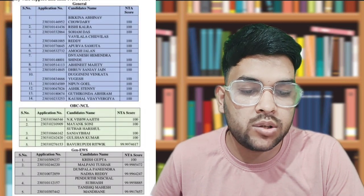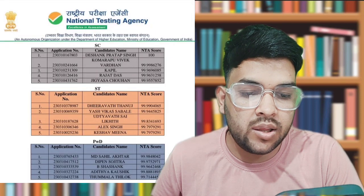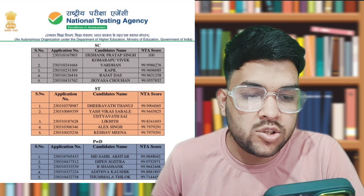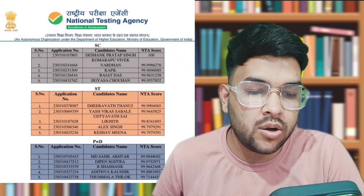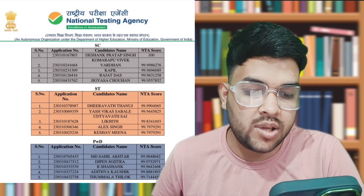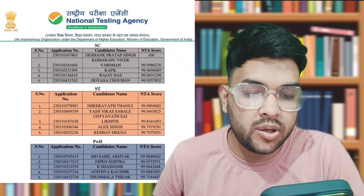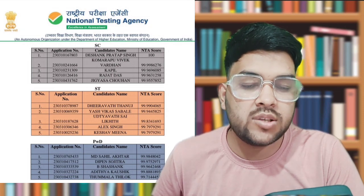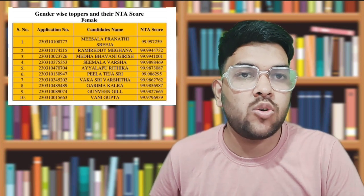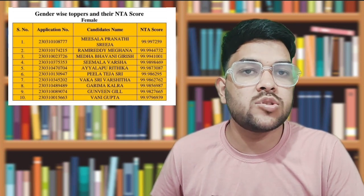Category-wise 100 percentile achievers: OBC – 4 students; EWS – 1 student. In SC, there is one student who got 100 percentile. In ST, no one got 100 percentile — the topper got 99.99 percentile. From PWD, the topper is MD Sahil with 99.98 percentile. These are the stats for the first attempt of JEE Mains. Hope you find this information useful — you can check the details as well. Thank you.